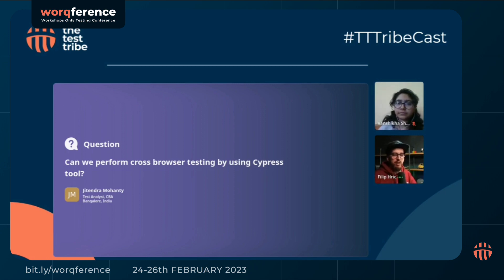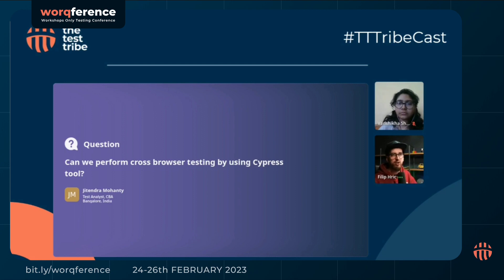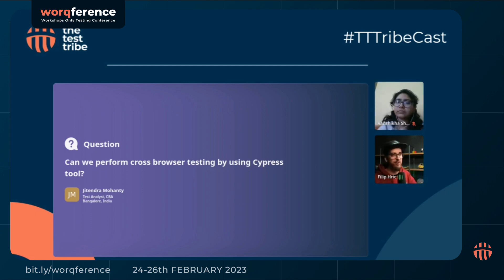My only advice here would be to make sure that it's done in a reasonable way, because with Cypress you're not really testing the browser — you are testing your application. So if you want to check compatibility with different browsers, you might not really want to run 100 tests in Chrome, then all 100 in Safari, then 100 in Firefox. I don't believe that's very effective.